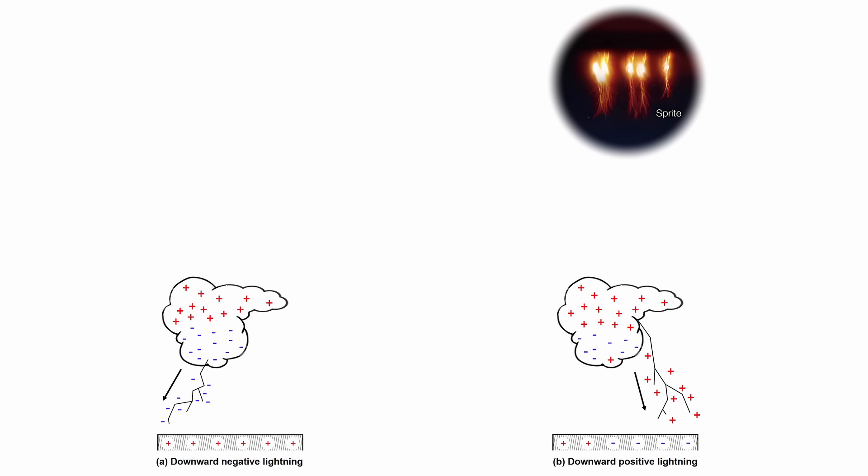Despite thousands of positive ground-flash sprite associations, only two well-documented instances of sprites originating from ground flashes with negative polarity have been published. This rarity stands in stark contrast to the prevalence of negative cloud-to-ground flashes.